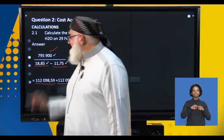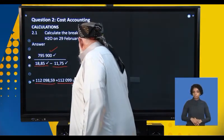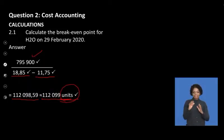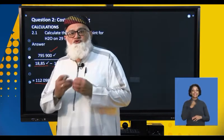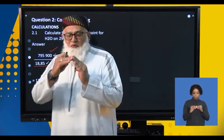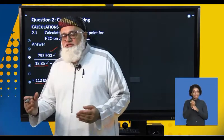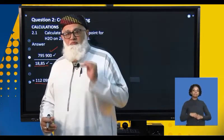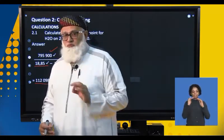The break-even point is the number of units you must manufacture so that at that point you neither make a profit nor a loss — your profit equals zero. That's your break-even point of 112,099 units.